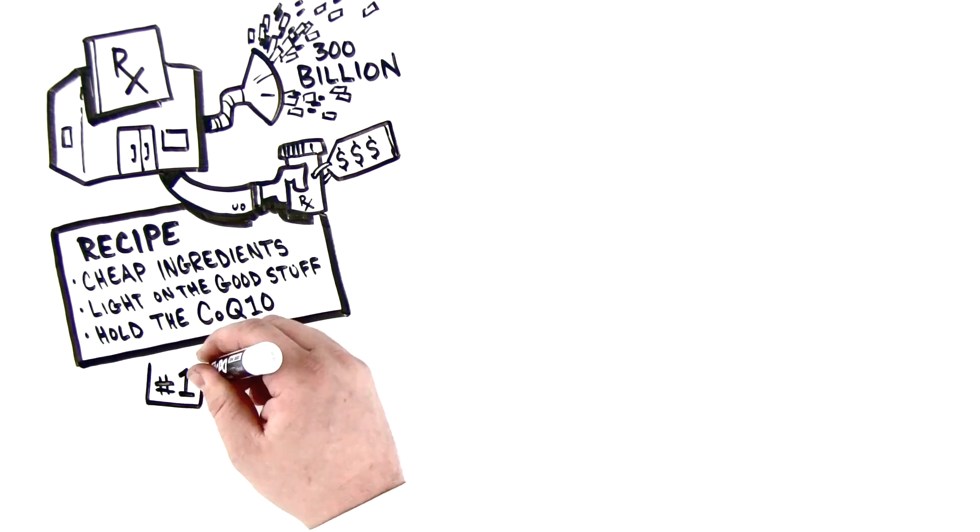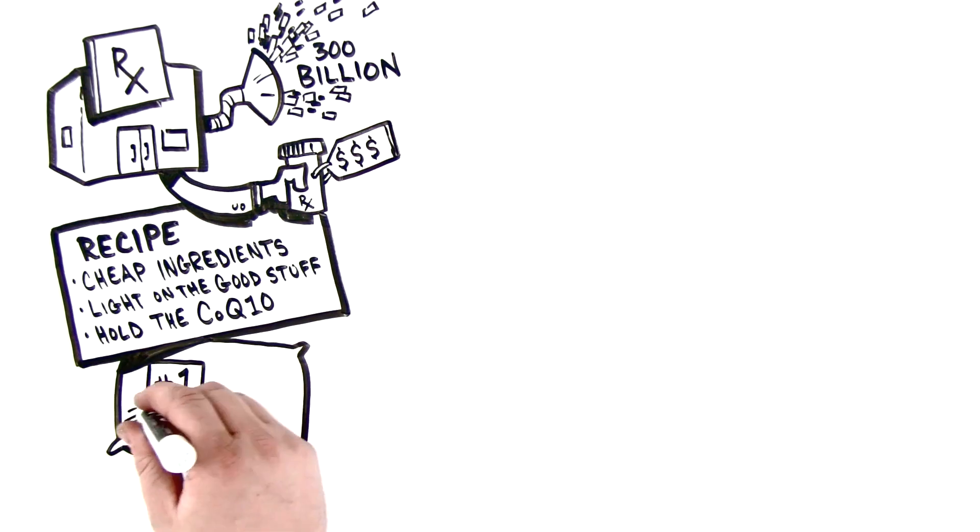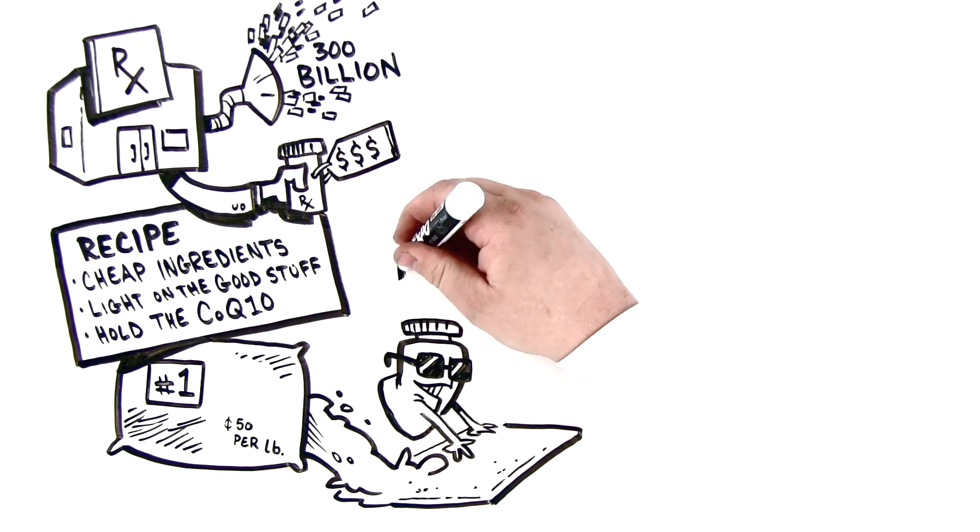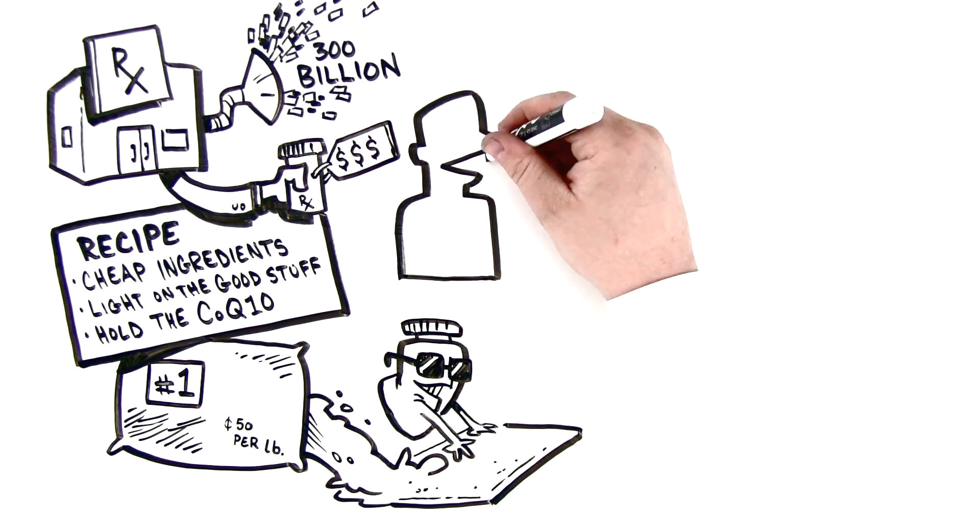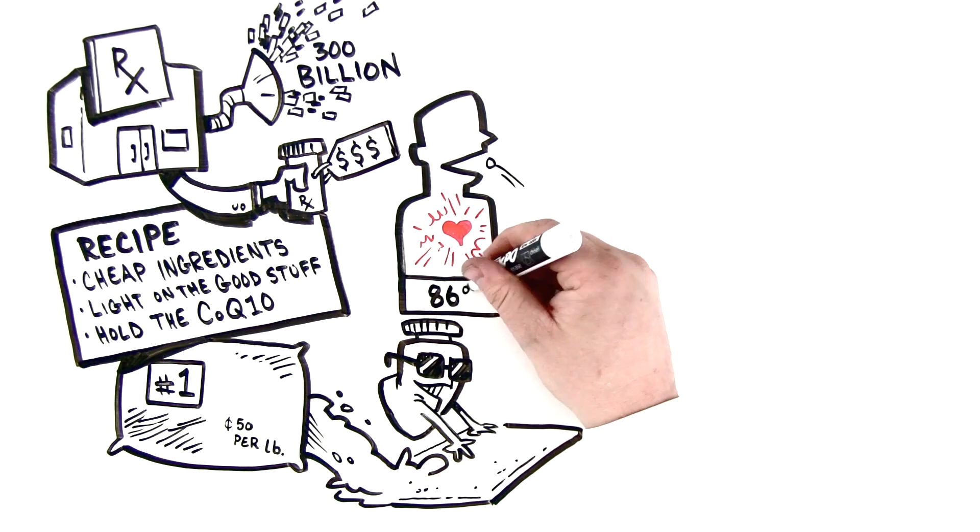The number one ingredient in most is dirt-cheap, under 50 cents a pound calcium carbonate, the main ingredient in cement and concrete. Several studies indicate those consuming the highest amount of calcium actually have increased heart attack risks up to 86% higher.